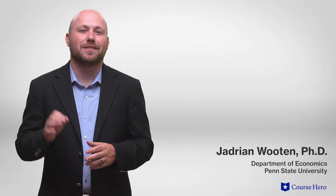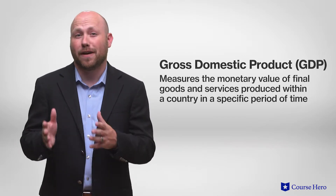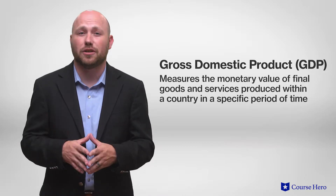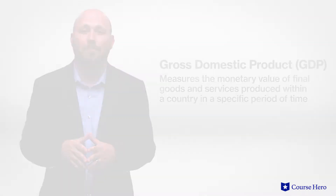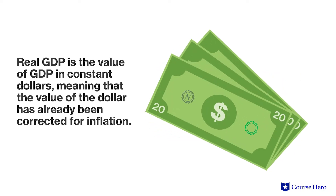When an economy grows, it increases its ability to produce goods and services. Not all goods and services are valued equally, so this ability must be measured by the value of products produced, not just the volume. Gross domestic product measures the monetary value of final goods and services produced within a country in a specific period of time. Real GDP is the value of GDP in constant dollars, meaning that the value of the dollar has already been corrected for inflation and therefore reflects the same ability to purchase goods and services.